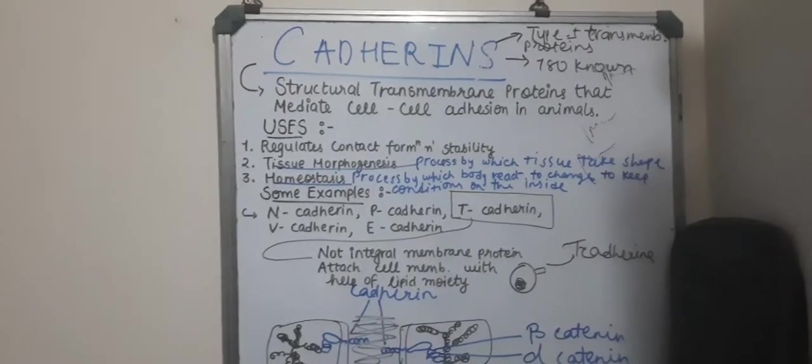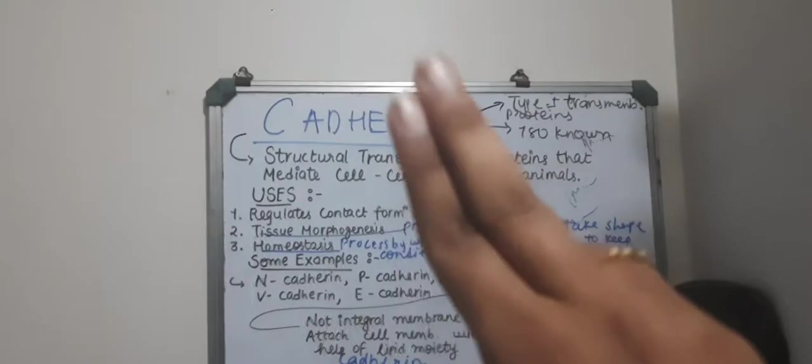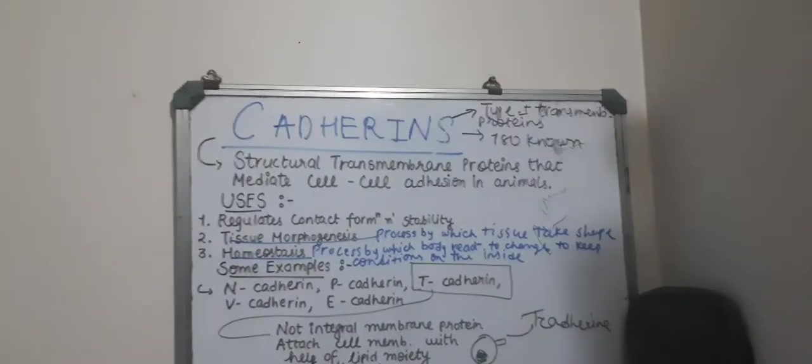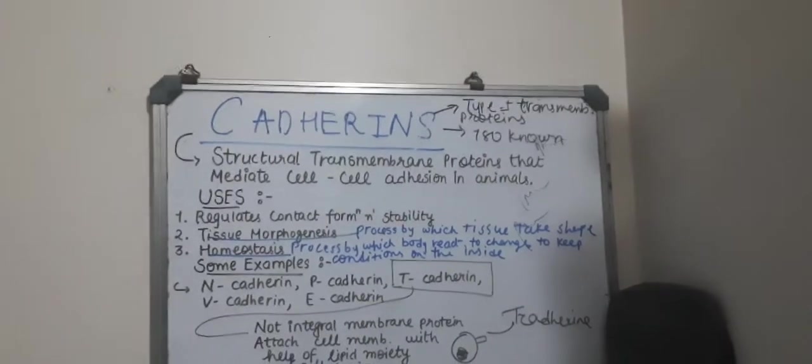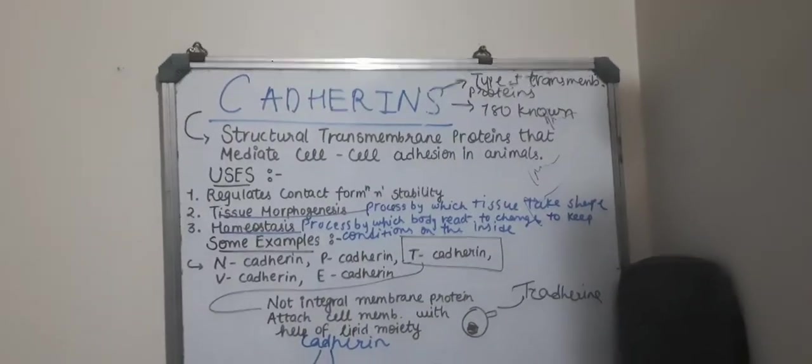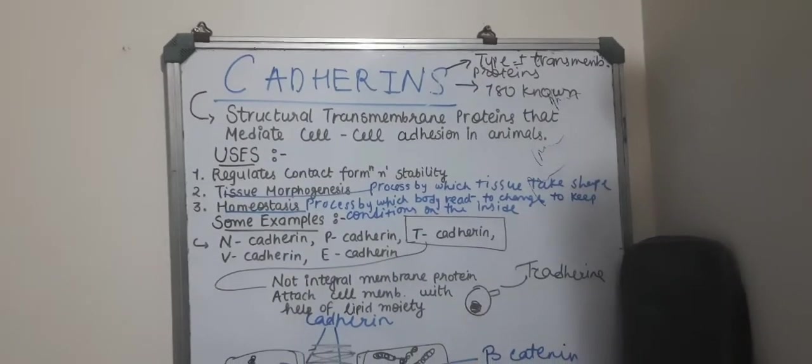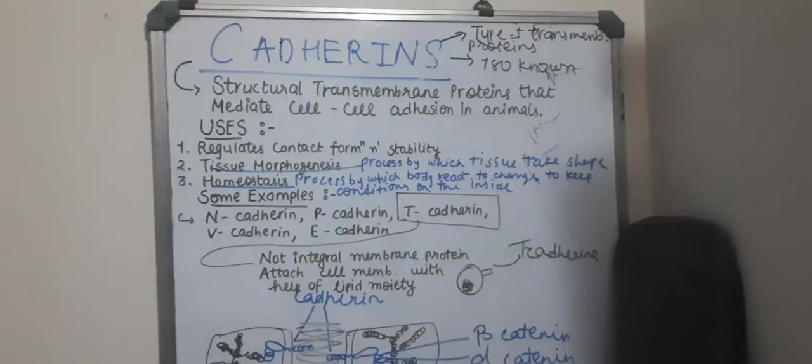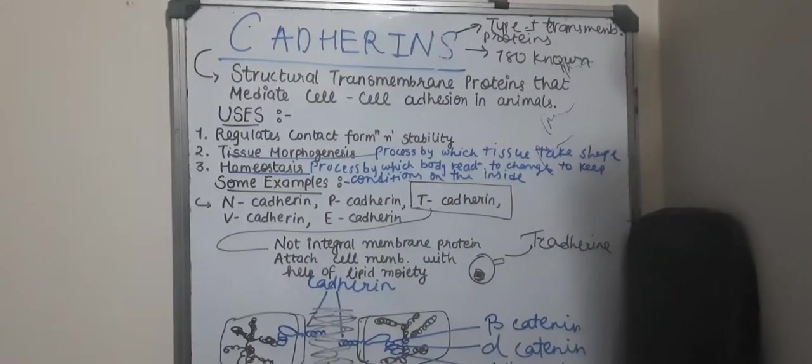So what do you understand by this? They are calcium adhering proteins - cadherins, simple. Now another thing which you have to memorize is that they are type one transmembrane proteins.